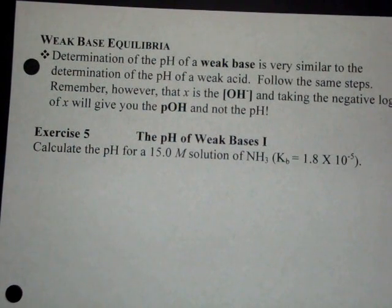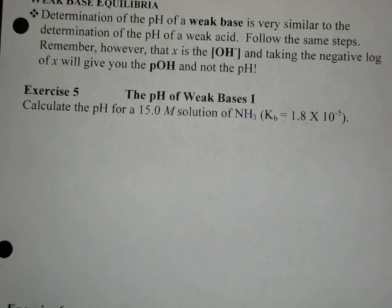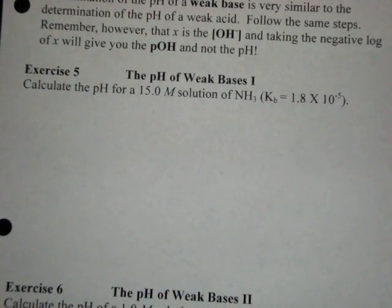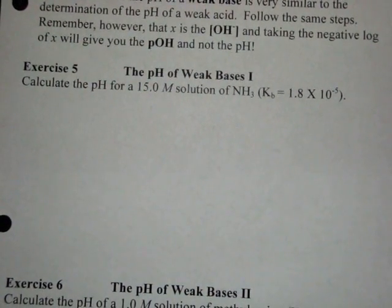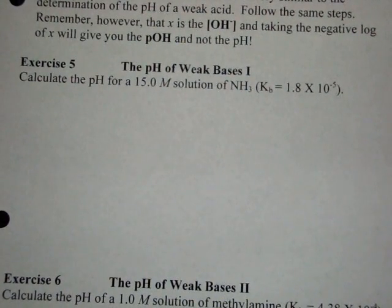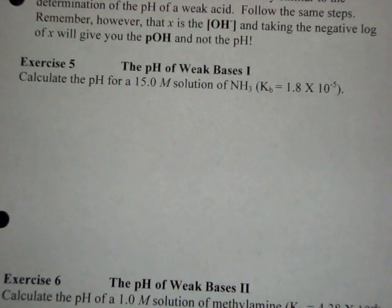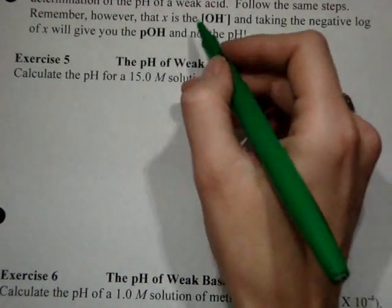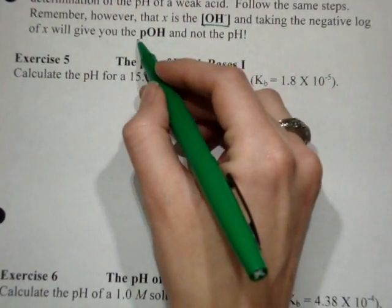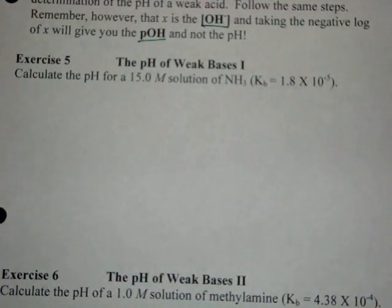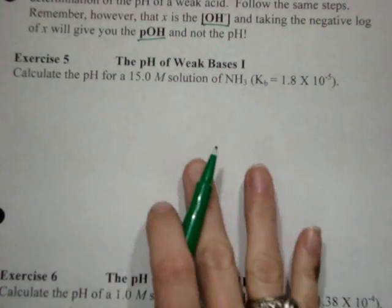Okay, onward and upward, more pH of weak acids and bases, pH of weak base equilibrium now. So the only difference here, these are going to be two very basic problems. Instead of producing hydrogen from which we can find the pH, weak bases will produce hydroxide from which we can find the pOH and then the pH.